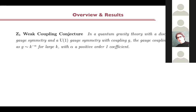Since I know that you're very busy people and many of you maybe leave the seminar before it's finished, let me start with the end, which are the conjectures. The first conjecture is that we propose that in a quantum gravity theory, if you have a discrete Z_K gauge symmetry in the very large K limit, and a U(1) gauge symmetry with coupling G, the gauge coupling scales as a negative order-one power of K. So they go to weak coupling as K becomes large.